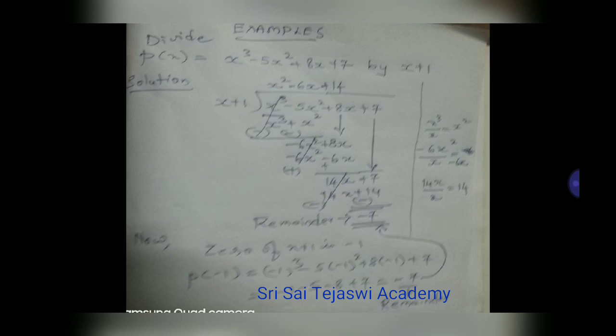Now let us verify. The divisor is x plus 1; zero of x plus 1 means x plus 1 equals 0, so x equals minus 1. Put minus 1 into the dividend p of x — find p of minus 1. You will get minus 7, which is the same as the remainder. So your answer is correct. That is the check you can do — this is the procedure for remainder theorem problems dividing two polynomials.